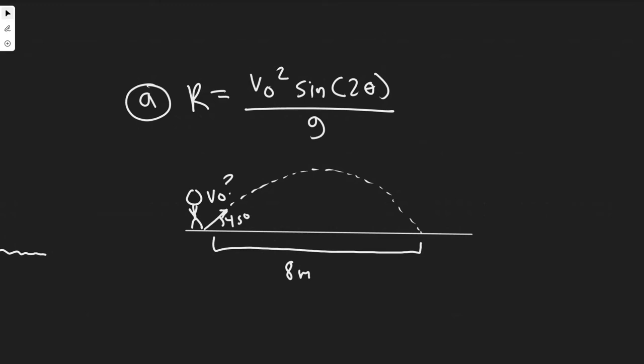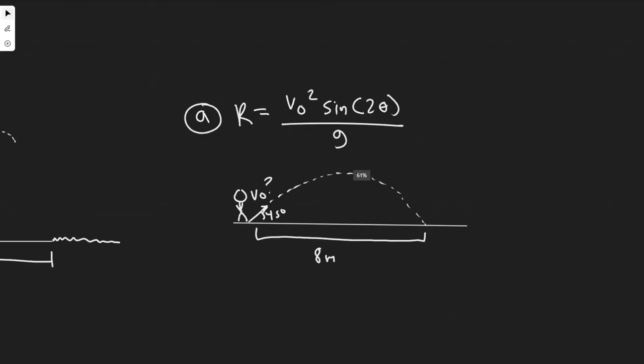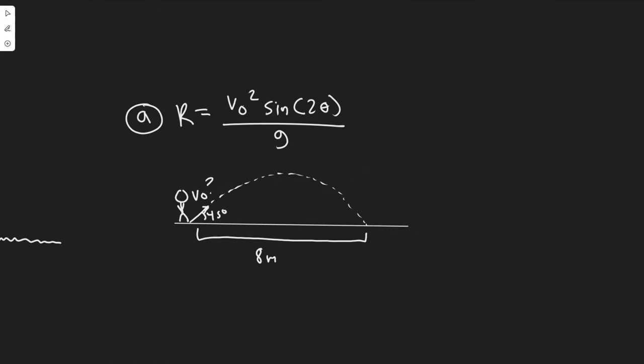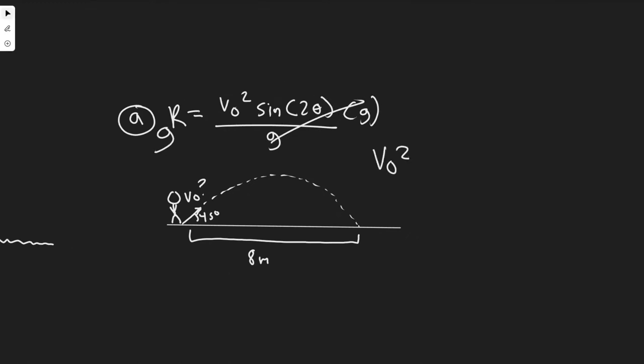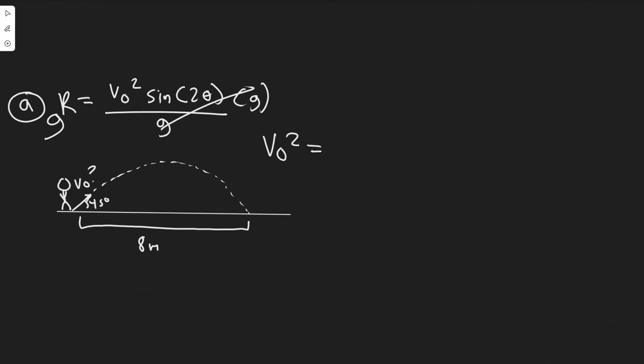All we really have to do is just solve for V₀, because that's what they want us to solve for in A. Getting it in terms of V₀, you multiply both sides by g, divide by the sine of 2θ. So V₀² equals gR over the sine of 2θ. Then you would square root both sides, and that would solve for V₀.